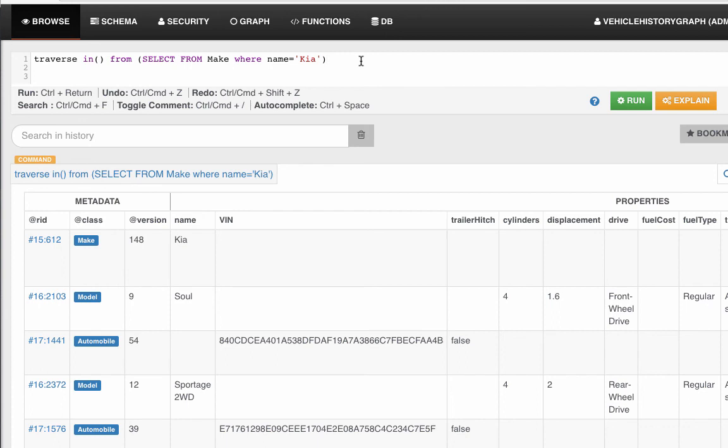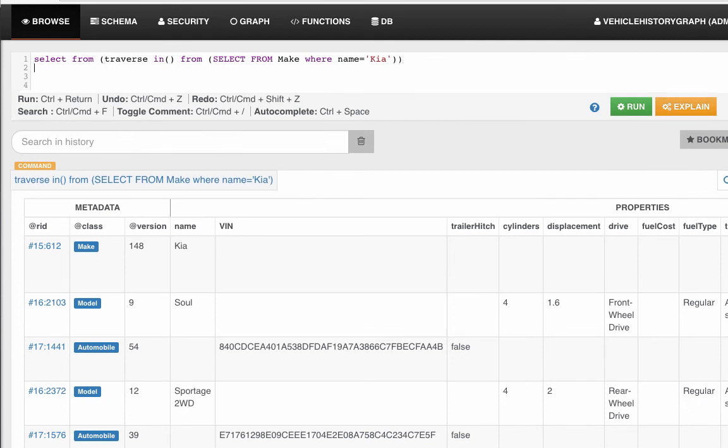Now we're only interested in which automobiles are KIAs, so we have to narrow this traverse down a little bit more. What we'll do is we'll say select from that traverse statement where our class is automobile.